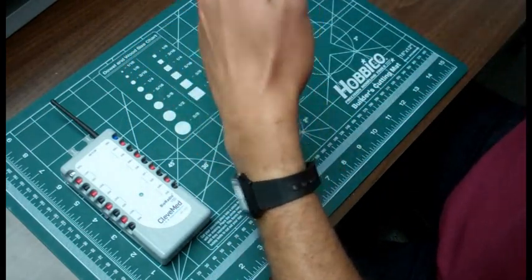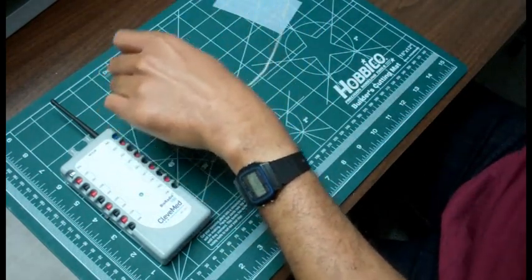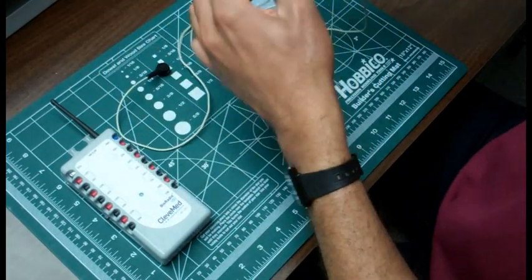We will connect an electrode cable to each electrode on the wrist. We will connect the third electrode cable to the third electrode on the elbow.